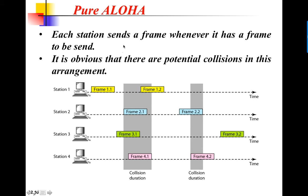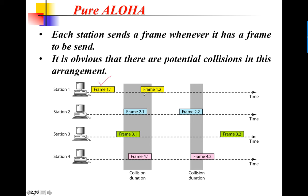In pure Aloha, if a station wants to send a frame, it will just send it — there is absolutely no rule. In this scenario, station 1 sends frame 1.1 with no other station transmitting at the same time, so frame 1.1 is successful in its transmission.